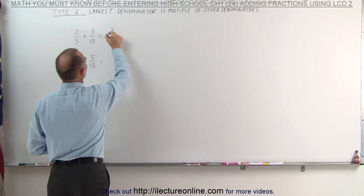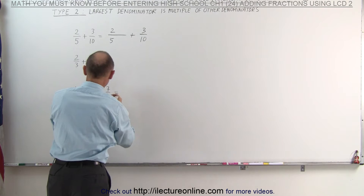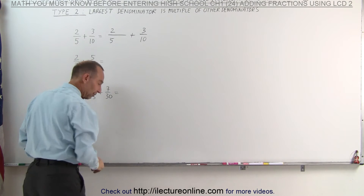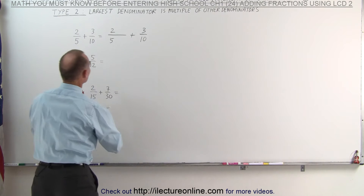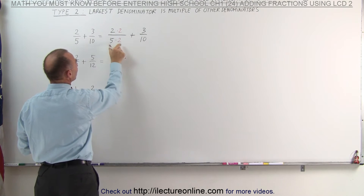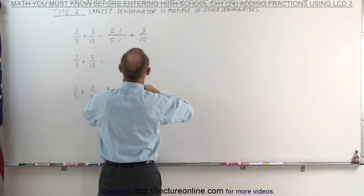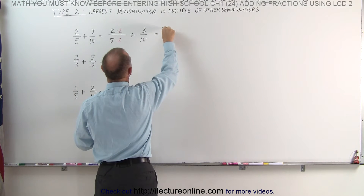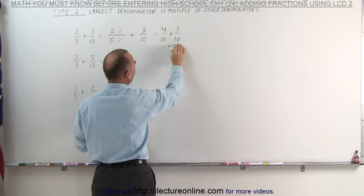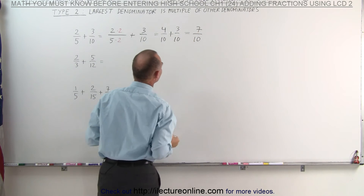That means that the first fraction can be written as follows. The second fraction will not change. What we're going to do here is multiply the denominator times 2 to make it equal to the denominator of the other fraction. But of course, when we multiply the denominator times 2, we must also multiply the numerator times 2. That means the left fraction now can be written as 4 divided by 10. We add that to the other fraction, which is unchanged. Now that they have the same common denominator, we can simply add the numerators, and this becomes 7 divided by 10.